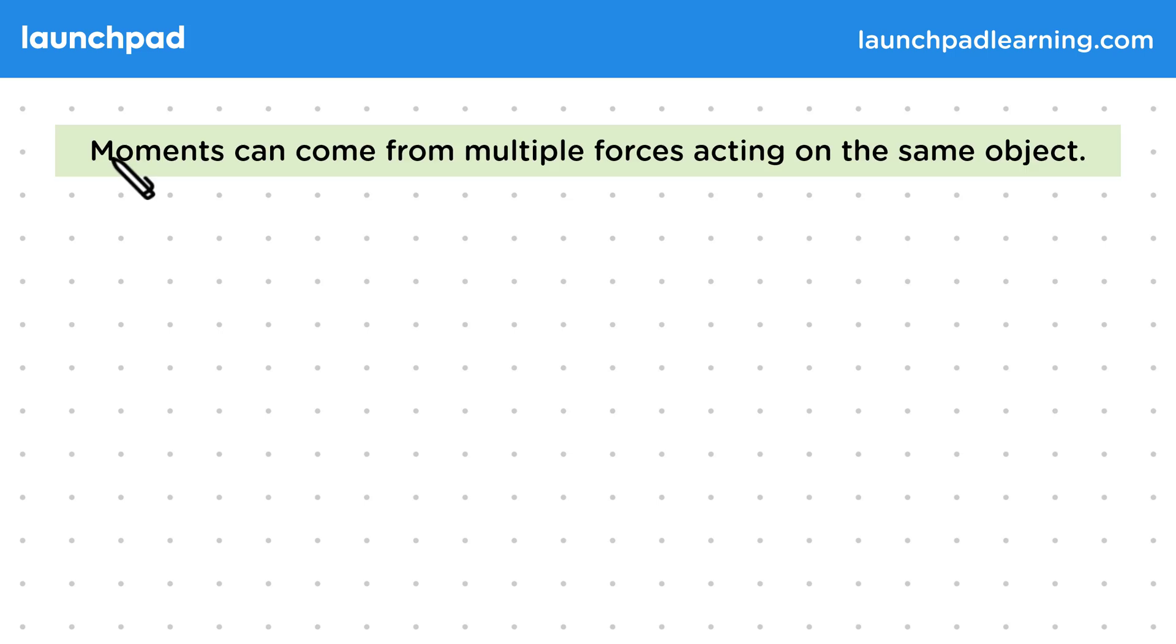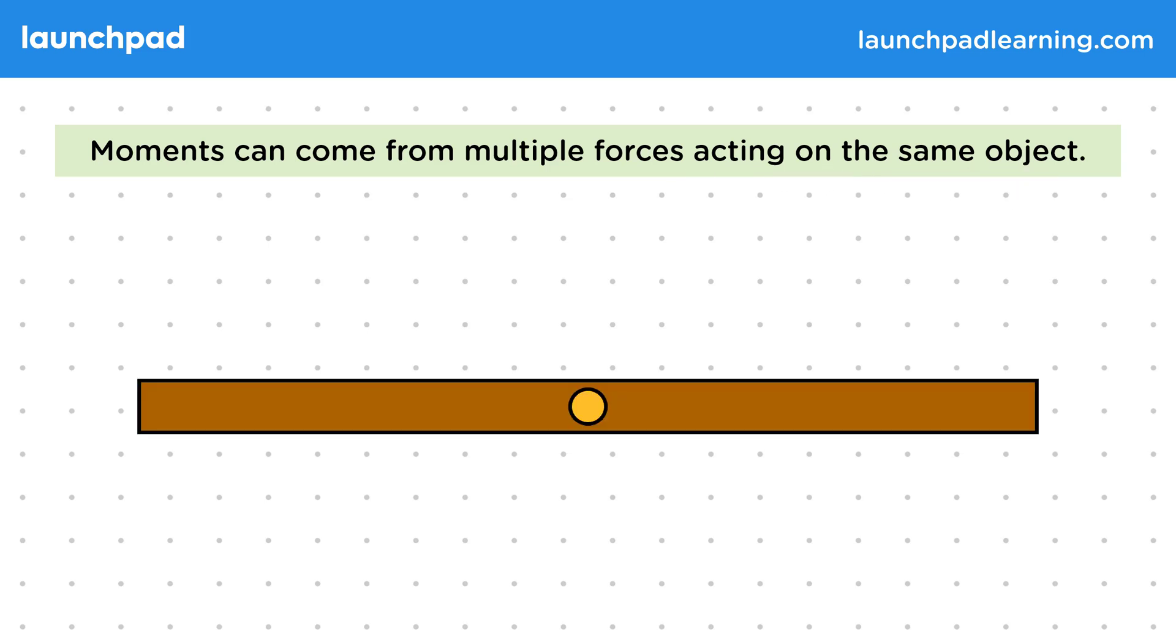First, let's look at situations with more than two forces contributing to a moment, since moments can come from multiple forces acting on the same object. We'll look at a simple plank of wood attached to a pivot at its centre and consider five perpendicular forces acting on it at different points along its length. Each force will create its own moment around the pivot.